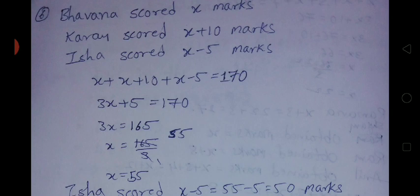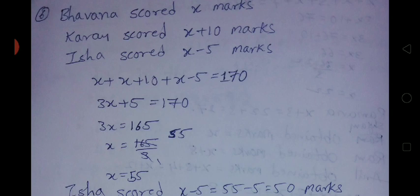The three of them got 170, so: X plus (X plus 10) plus (X minus 5) equals 170. That gives 3X plus 5 equals 170, so X equals 165 divided by 3, which is 55. Bhavna scored 55 marks. Isha scored 5 marks less than Bhavna, so 55 minus 5 equals 50 marks. Isha's score is 50.